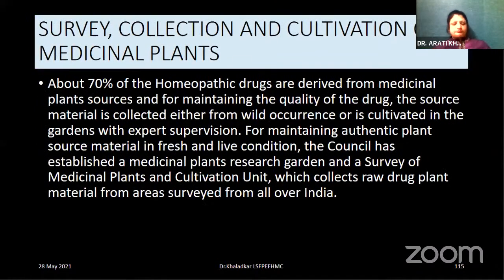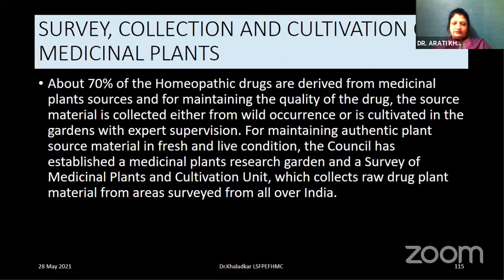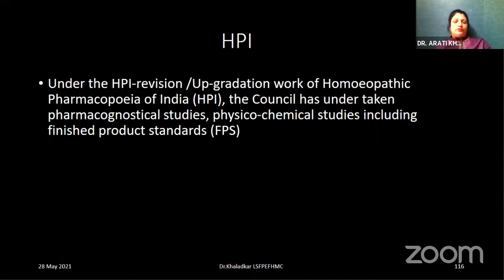So, my dear students, we have seen in short the whole of the sources of drugs. About 70% of homeopathic drugs have been derived from plant sources. For the maintenance of this source material — either in fresh or live condition — our respected council has established Medicinal Plant Research Gardens and Survey of the Medicinal Plants and Cultivation Units, where they collect all raw drug materials from all areas surveyed over India. Upgradation work includes pharmacognostical studies and physicochemical studies, especially for finished products. The upgradation of the Homeopathic Pharmacopoeia of India goes on absolutely beautifully.